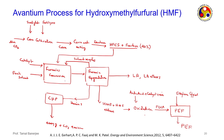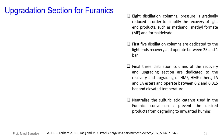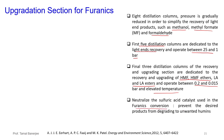The furanics upgradation unit uses 8 distillation columns with gradually reduced pressure to recover light-end products. The first 5 columns operate between 25 to 1 bar and separate methanol, methyl formate, and formaldehyde. The final 3 columns (6, 7, 8) operate under vacuum (0.2 to 0.015 bar) at elevated temperature for recovery and upgradation of HMF, HMF ethers, levulinic acid (LA), and LA esters. The sulfuric acid catalyst is neutralized at the end.